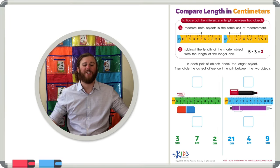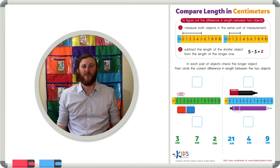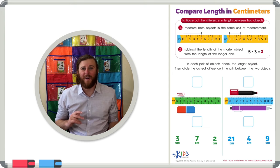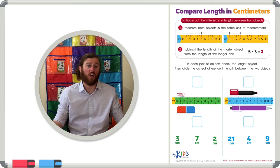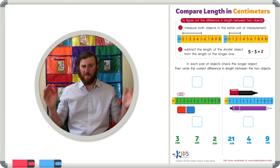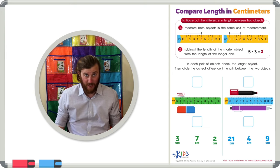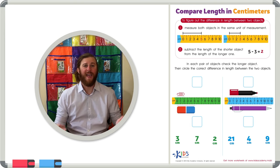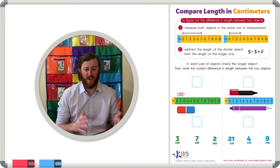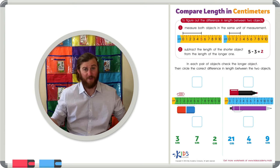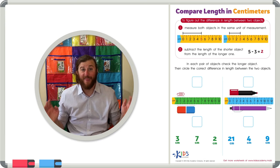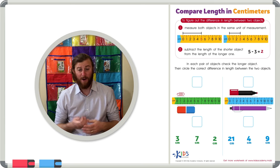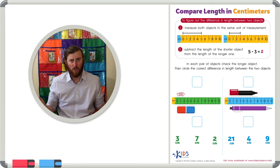Hello boys and girls, this is teacher Mike and today I'd like to talk to you about comparing the length of objects in centimeters. We're going to take two different objects, see which one is longer, and then see how much longer that object is. Let's talk about a strategy: first you have to measure both objects, then take the length of the shorter object and subtract it from the length of the longer object.